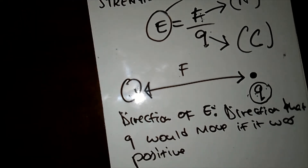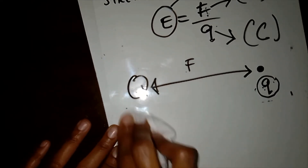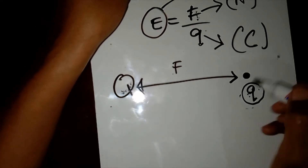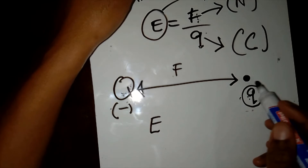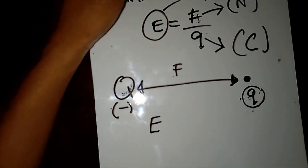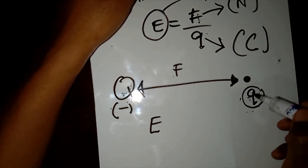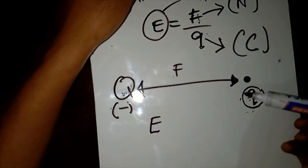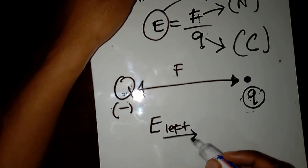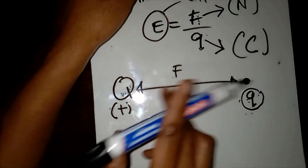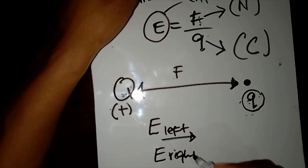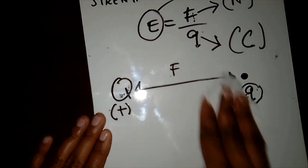For example, say there's a point charge and you need to find the electric field direction. If the charge is negative, the direction of the electric field would be the direction q would move if it were positive. If q were positive it would repel, moving to the right; if q were negative it would attract, moving to the left. That determines the direction of the electric field.